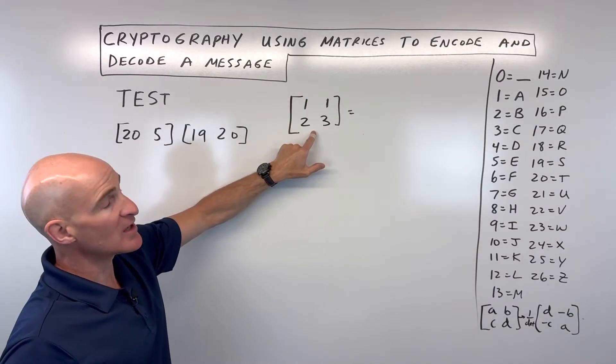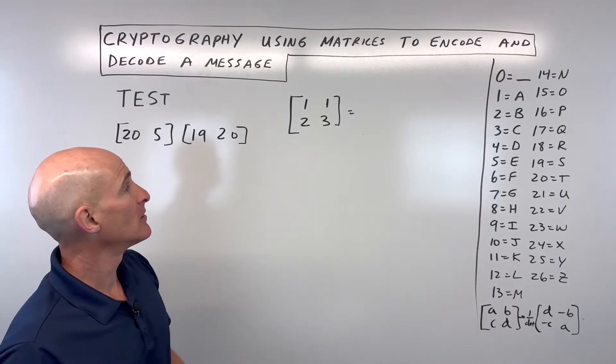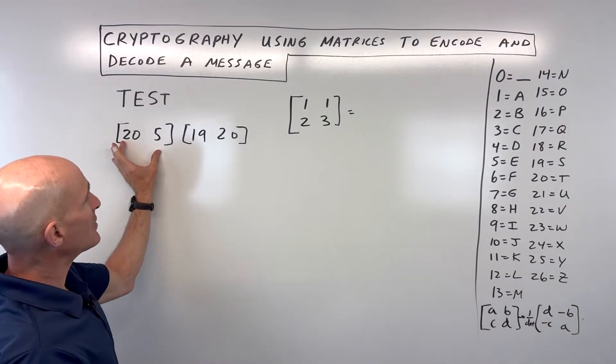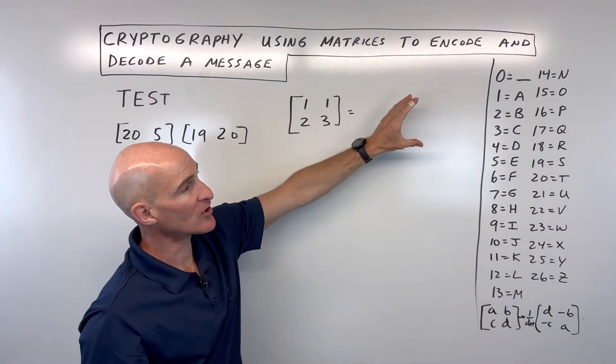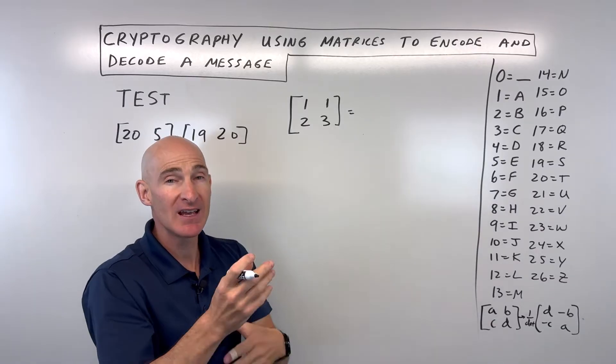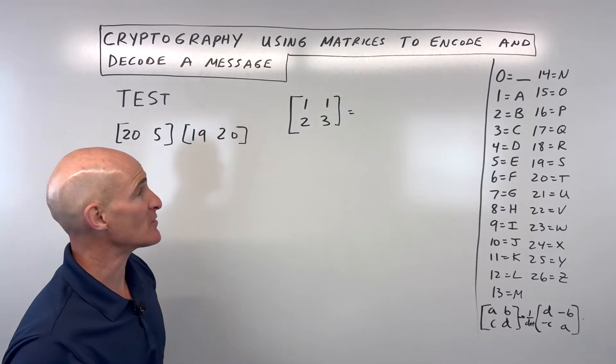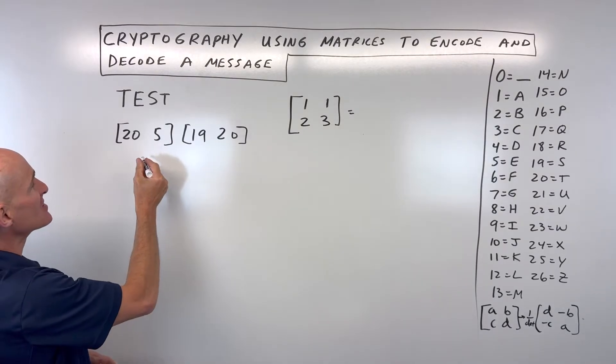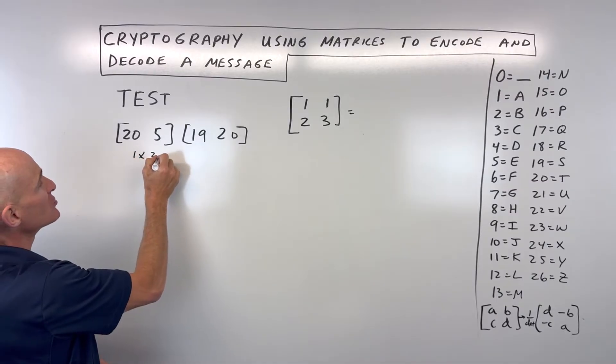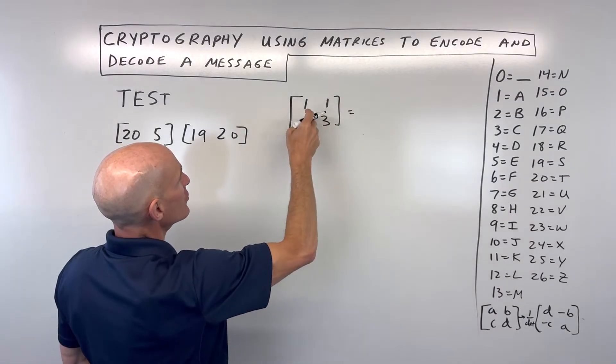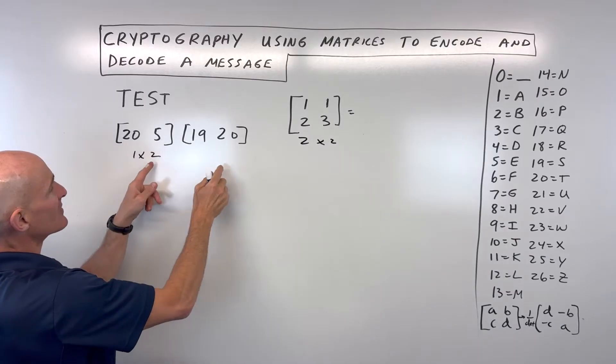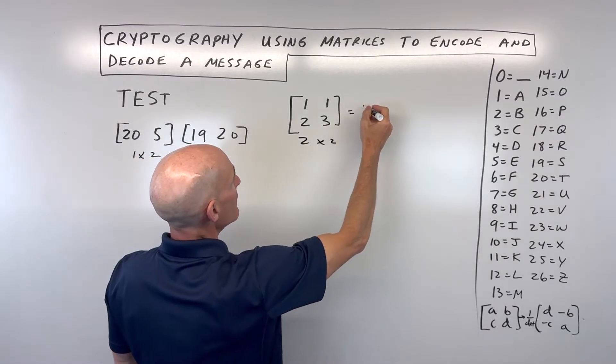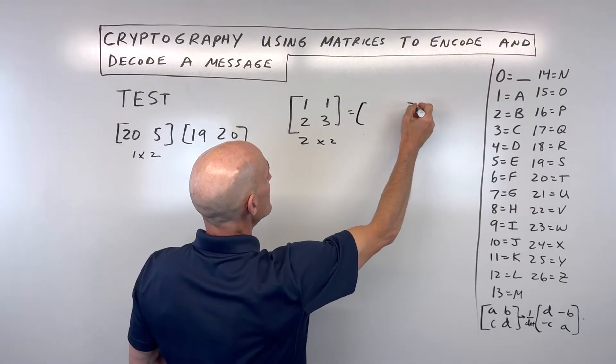But this matrix here is what's going to be encoding our message. So what we're going to do is take each of these matrices multiplied by our encoding matrix, and we're going to get a new matrix that we can then send to our friend with everything scrambled. When you multiply matrices, first thing you want to do is make sure the dimensions match. So this is a 1 by 2, this is a 2 by 2. If the inner dimensions match, you're going to end up with a matrix that has the outer dimensions, a 1 by 2 matrix.